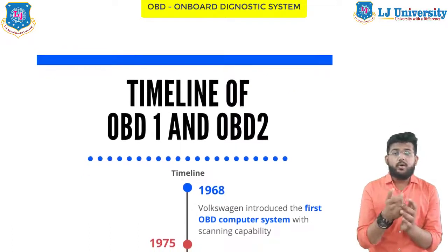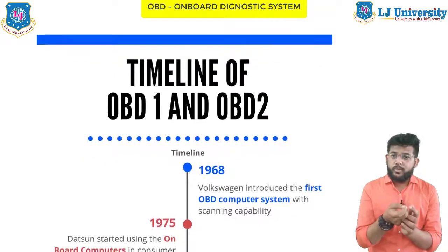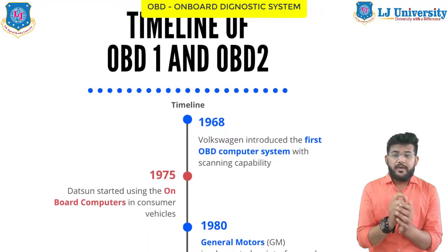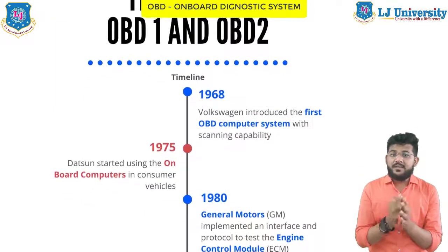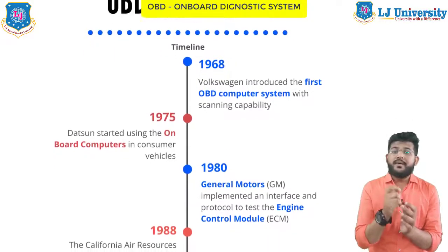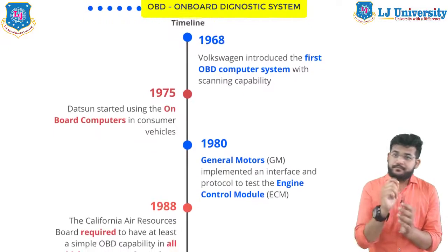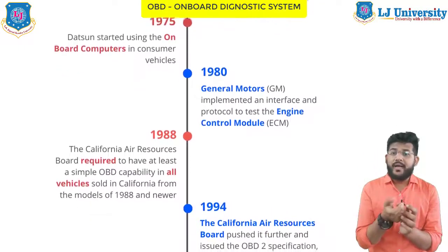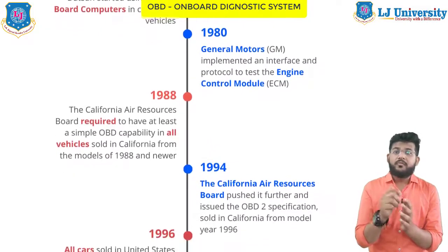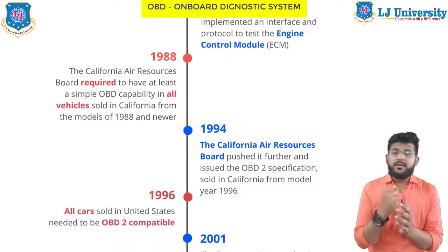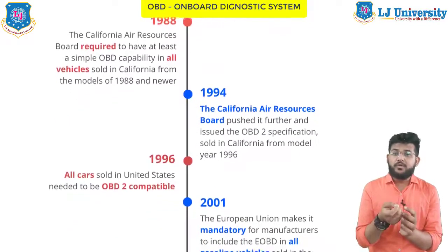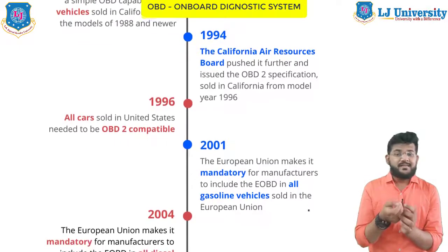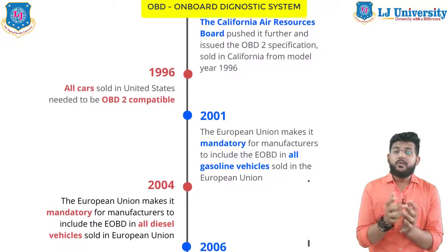Looking at the global history: in 1968, Volkswagen introduced the first OBD computer system with scanning capability. In 1975, Datsun started using OBD computers in consumer vehicles. In 1980, General Motors implemented a protocol to test the Engine Control Module (ECM). In 1988, the California Air Resources Board required at least simple OBD capability in all vehicles sold in California from model year 1988 onwards. In 1994, California pushed further and issued the OBD-2 specification.